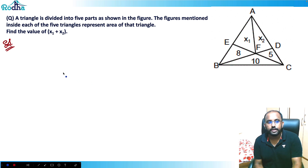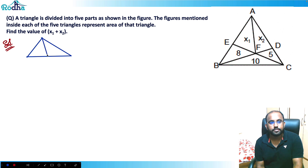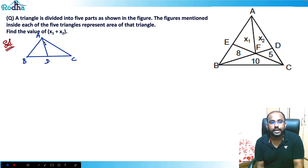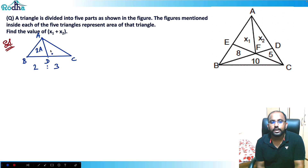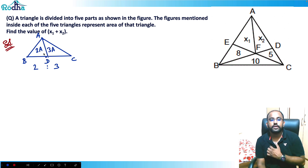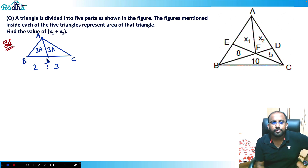Remember this concept from the geometry videos. Whenever in a triangle — say triangle ABC — AD is a cevian, and if it divides BD to DC in ratio 2:3, then because of the same height, the area also gets divided in the same ratio. So the area of triangle ABD will be 2a and area of triangle ADC will be 3a.